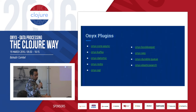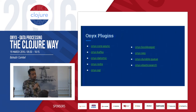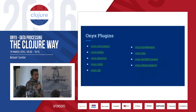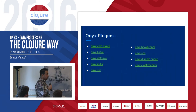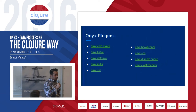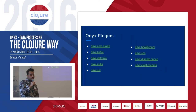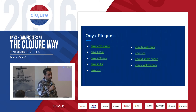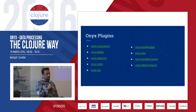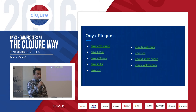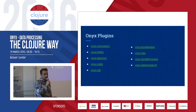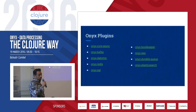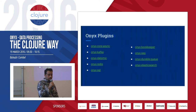One of the nice things about Onyx is that it comes with plugins out of the box: Kafka, Datomic, Redis, SQL, BookKeeper. You can sequentially read from files using the onyx-seq plugin. There's also a durable queue using local storage, and Elasticsearch.